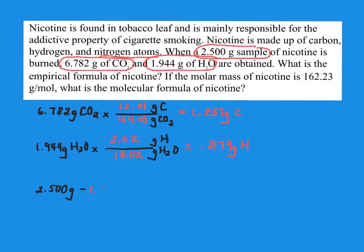I'm just going to go ahead and subtract here. That's your grams of carbon, minus 0.2179 grams of hydrogen. So we've got 0.4311 grams of nitrogen now.